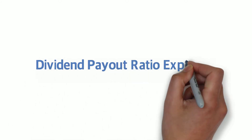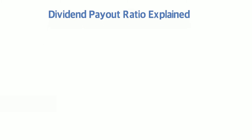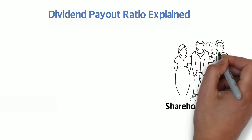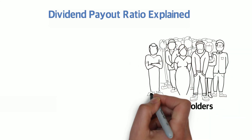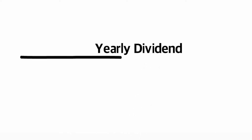Dividend payout ratio explained. If you want to generate passive income through dividend paying stocks, then you should keep an eye out on the dividend payout ratio. This ratio tells you how much of the company's net income or earnings is being paid out to shareholders as a dividend. The formula is calculated by taking the annual dividend and dividing it by the earnings per share.